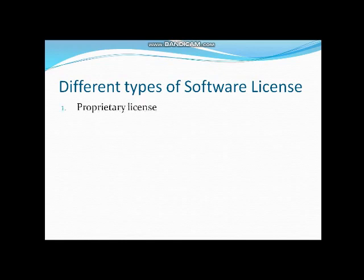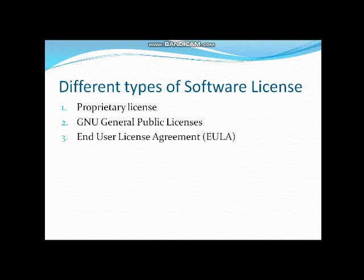The first type is your proprietary license — meaning the owner's license. The second type is GNU, which stands for General Public License. This is generally your open source software, meaning it is freely available. While downloading any software, if the software is under GNU, you can download it. The third is the End User License Agreement, called EULA. The fourth is workstation licenses — limited to a number of machines. If you use it on one machine and try another device, the first installation may be deactivated.